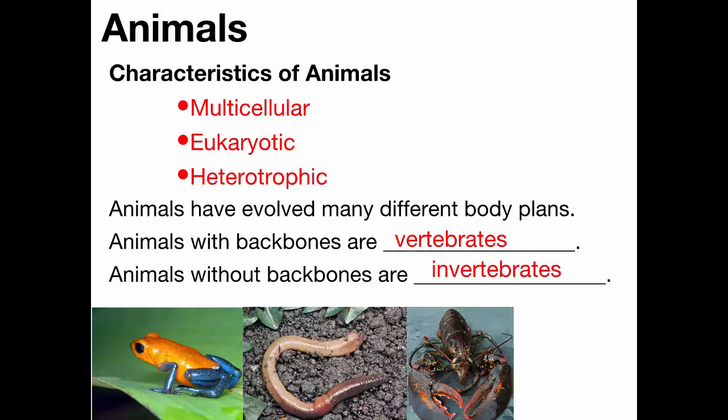A lobster — invertebrate. A lobster has a hard exoskeleton on the outside, but if you've ever eaten a whole lobster, there are no bones inside of it. Lobster is an invertebrate. It has no backbone.